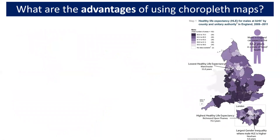So why do we use choropleth maps and what are the advantages? Here we have another choropleth map which shows life expectancy for men in England, and London down here. London is exactly here where I'm pointing, but because it's quite hard to see on this map they've done a larger version just down here.